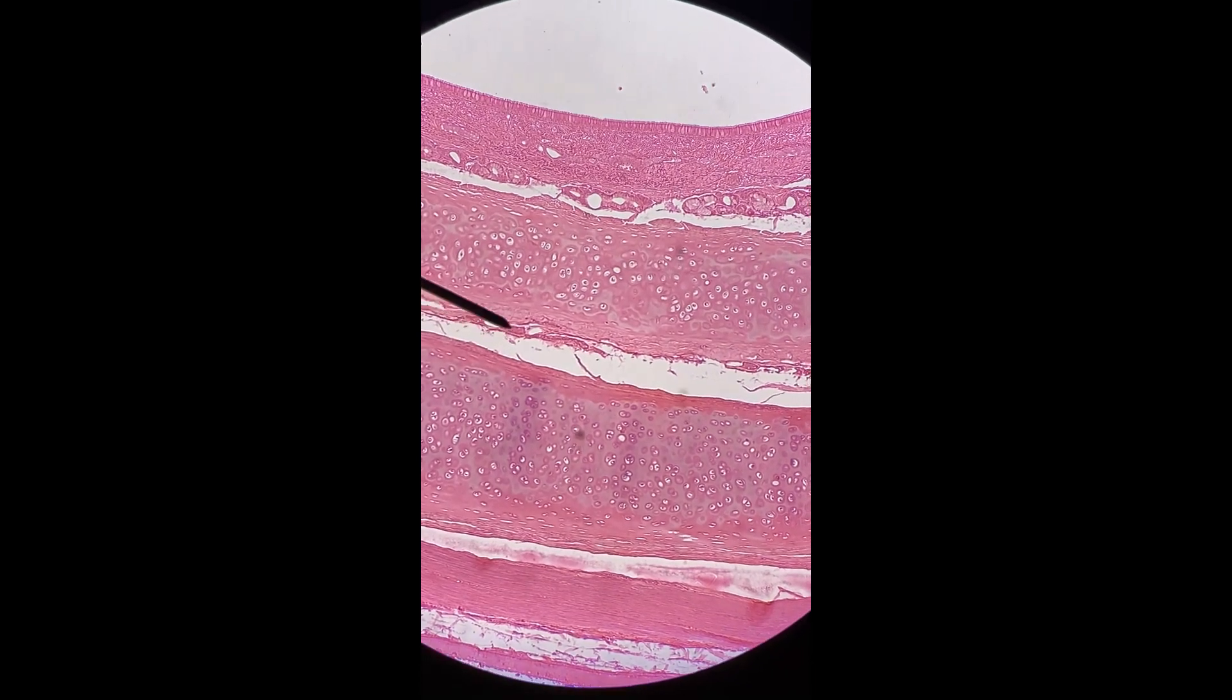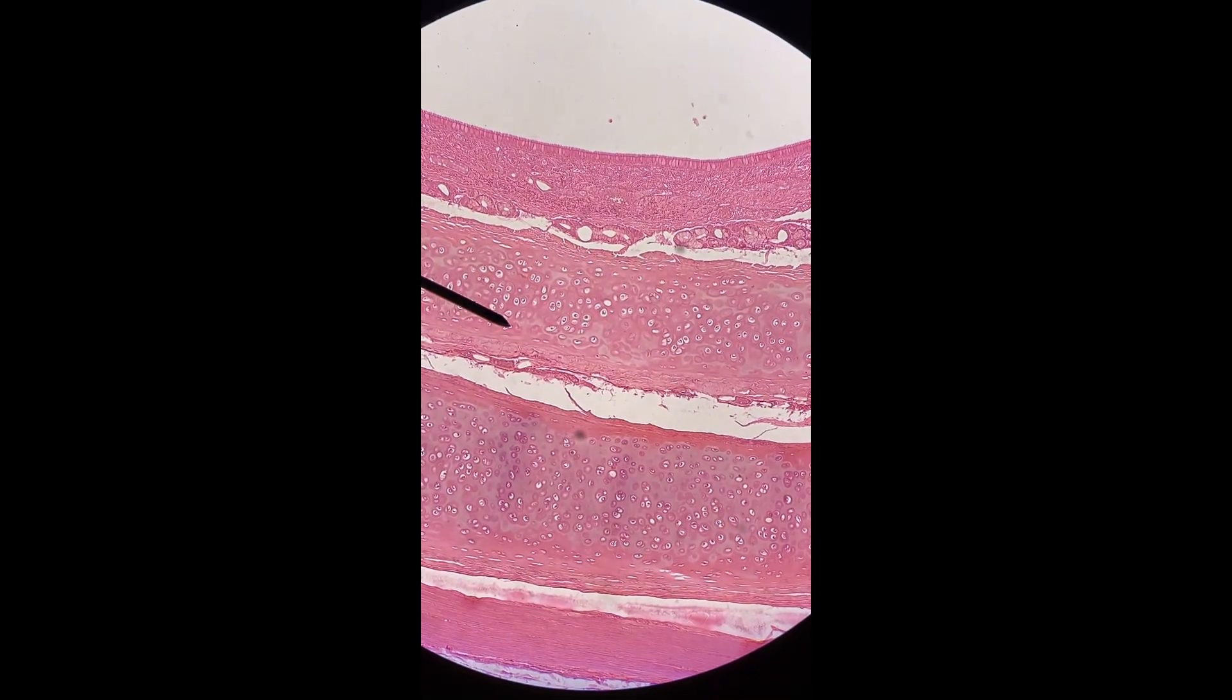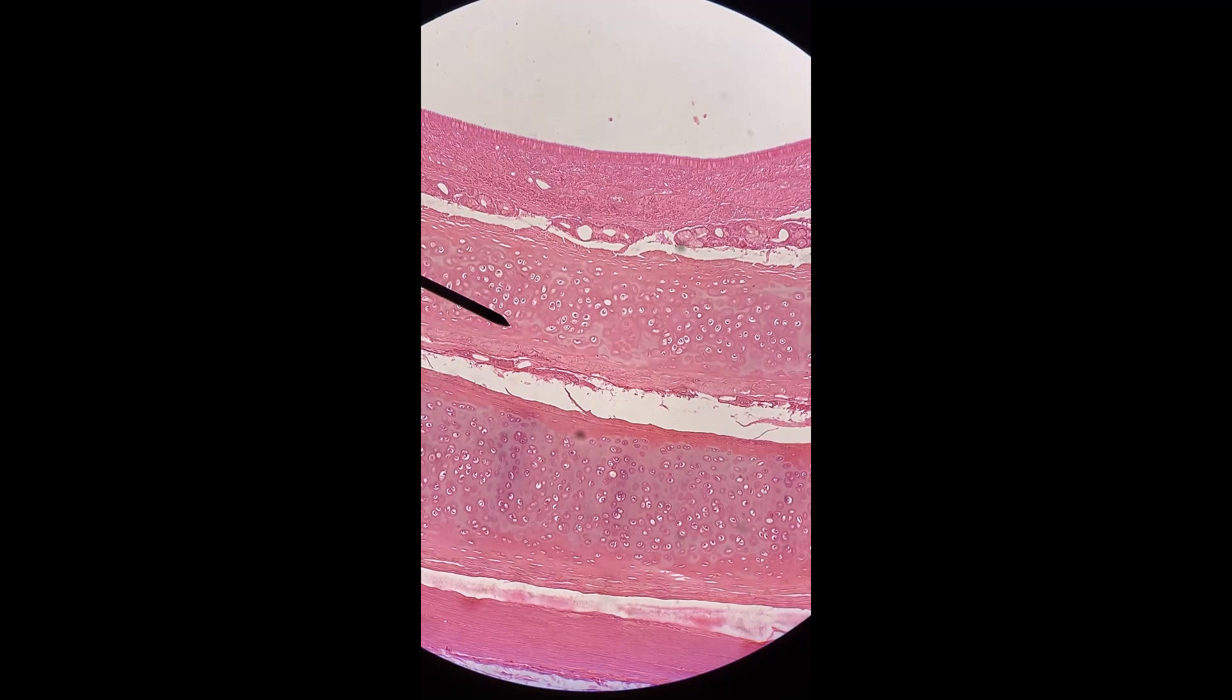Now we can see the hyaline cartilage - that's classic hyaline cartilage there with that big field of matrix, those little lacunae, and the chondrocytes inside.